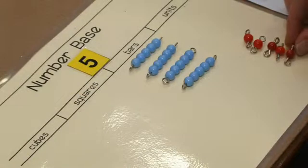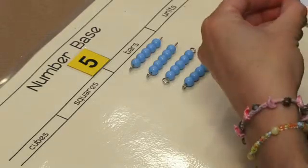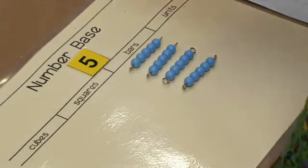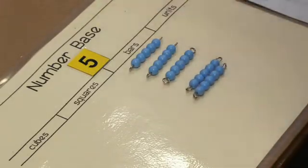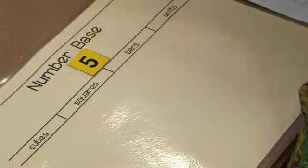We add 1 to base 5, 4, 4. At this point, the students might point out that we have 5 bars and we can exchange for base 5, 1, 0, 0 or a base 5 square.